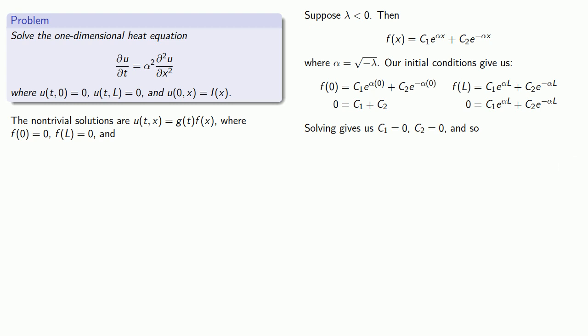So we know that c1 is equal to 0 and c2 is equal to 0. Moreover, because these exponential coefficients are going to be different we know this is the unique solution. And so that tells us that f of x must be 0 for all x. But that means u of t of x must also be 0 for all t and x. And that's a trivial solution and we're not looking for those. So we know that lambda cannot be less than 0.